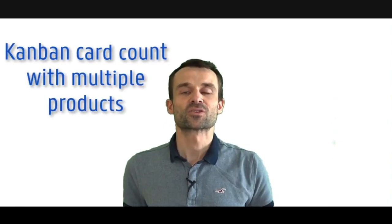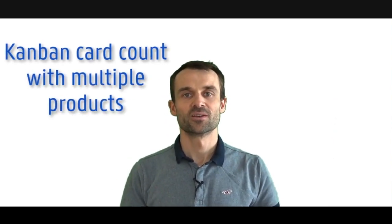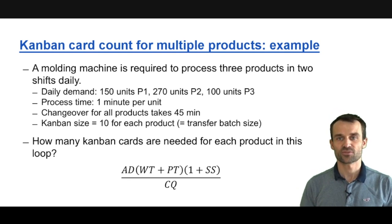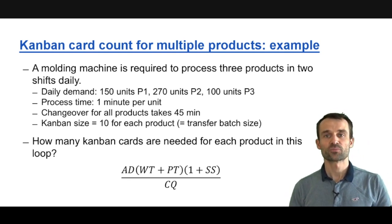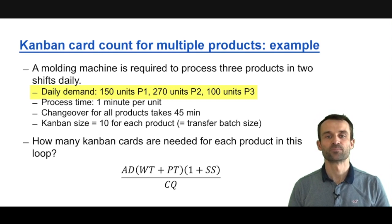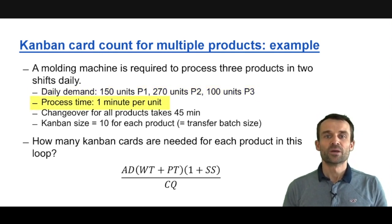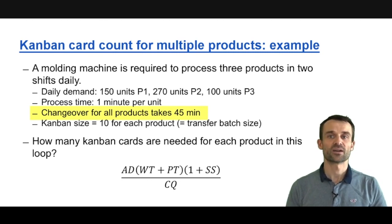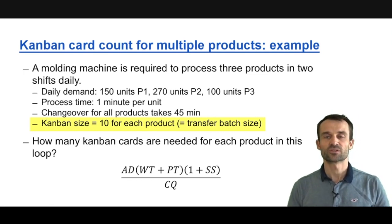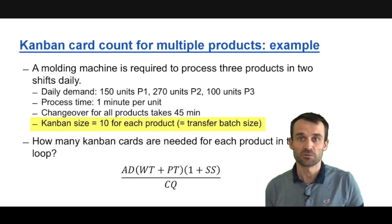Let's look at how to calculate Kanban card counts if we have multiple products on a machine with setup types. We have a molding machine that produces three products, and every day we have two eight-hour shifts — 16 hours available per day. Product P1 has a daily demand of 150 units, P2 has 270 units, and P3 has 100 units per day. The process time is one minute per unit, and changeover time between products is 45 minutes. We'll work with a Kanban size or container quantity of 10 units for each product.